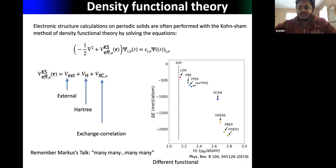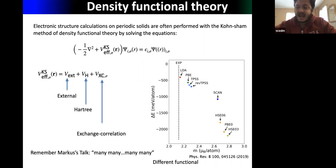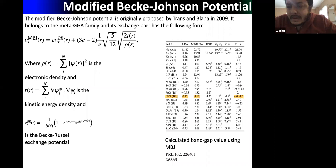As discussed in Marcus's last talk, we have many approximations in the exchange-correlation term. The DFT community has worked really hard to develop better and better exchange-correlation functionals: starting with LDA, then GGA, and various meta-GGA functionals. Recently, SCAN and hybrid functionals have also been developed.